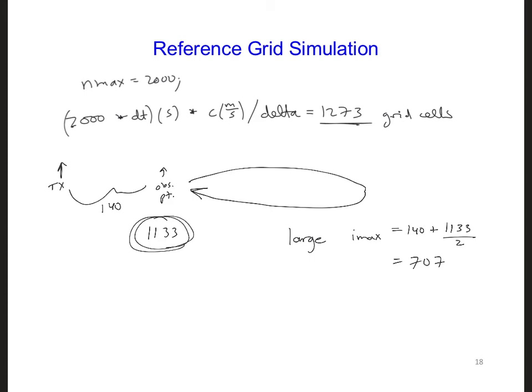Let's add on some extra cells because the right edge of the large grid also has PML. So let's just go ahead and make this equal to 750.